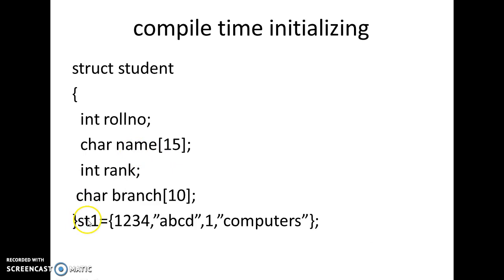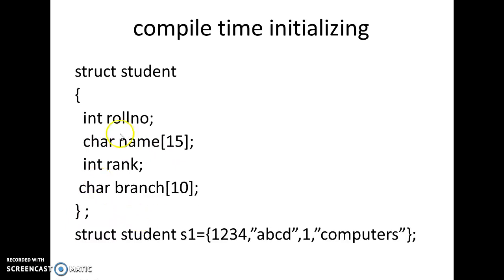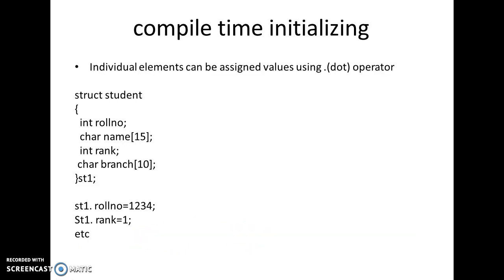Another compile-time approach is to declare the structure ending with a semicolon, and then at the time of creating the structure variable, assign values using the assignment operator. Alternatively, individual elements can be assigned values using the dot operator: 'st1.rollnumber = value', 'st1.rank = 1', and so on for the other elements.